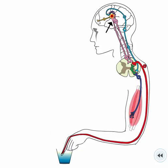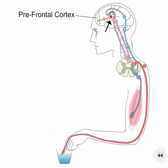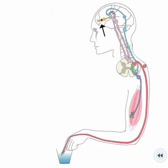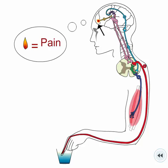Impulses from the sensory cortex also go to the prefrontal cortex of the cerebrum to be recorded as a memory that associates the site of fire with pain. This causes you to be more careful when you are near a hot stove.